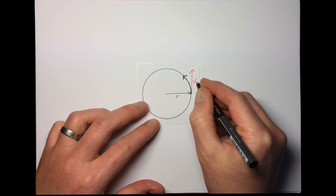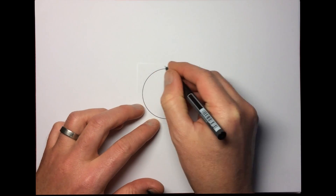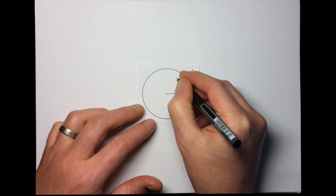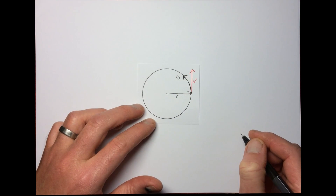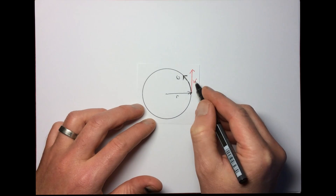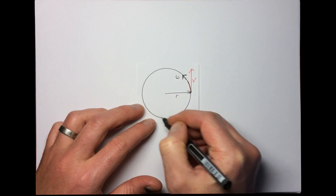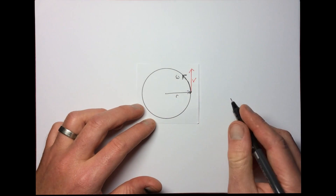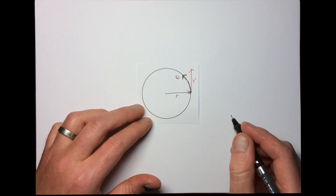The object is traveling around with a certain linear velocity v, and it also has what we call an angular velocity. The angular velocity is given the symbol omega, and it represents the angle through which the object travels per second. So we've got linear velocity directed as a tangent, and angular velocity which is the angle passed through every second.